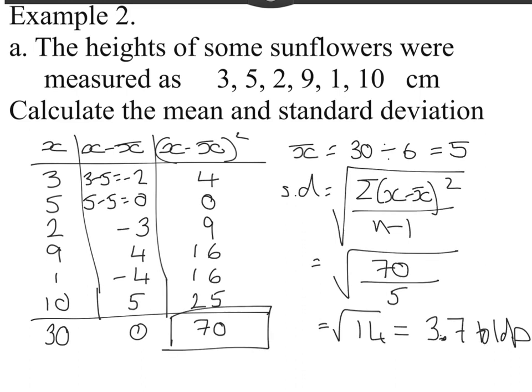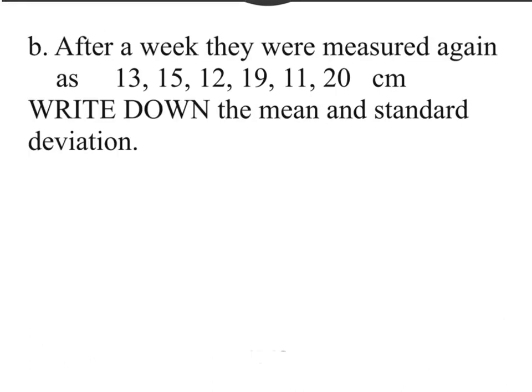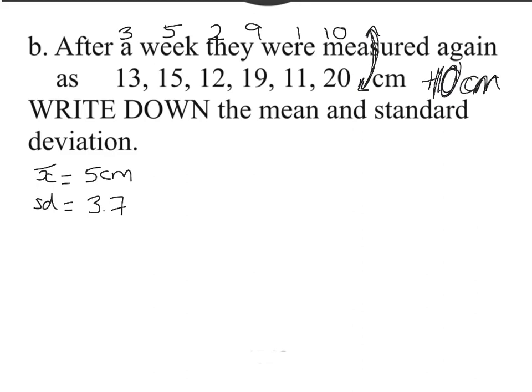This means absolutely nothing until we compare it to something. So let's have a look at part b. After a week, the same sunflowers are measured again as 13, 15, 12, 19, 11, and 20 centimeters. We have to write down the mean and standard deviation. I'm going to write down the previous mean was 5 centimeters and the previous standard deviation was 3.7. Let's have a look at these numbers. Our previous numbers were 3, 5, 2, 9, 1, and 10. Please have a look at both lists of numbers. What do you spot? Hopefully you'll see the difference between the original numbers and the new numbers is that they've all grown by 10 centimeters.